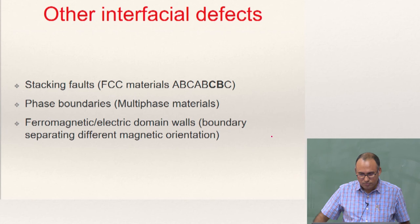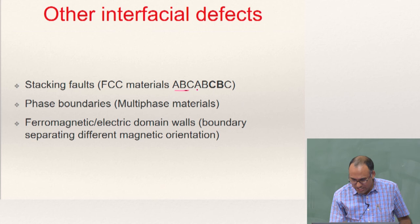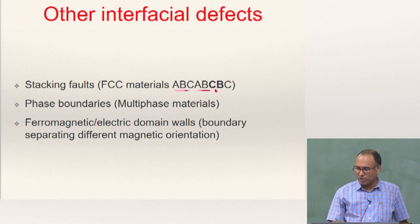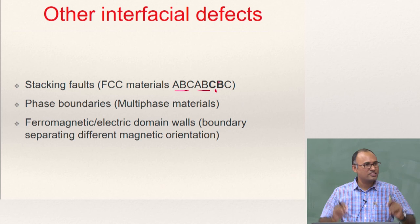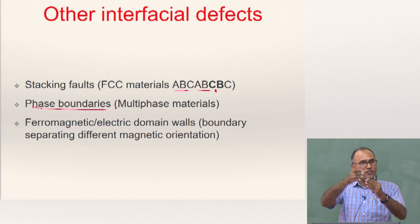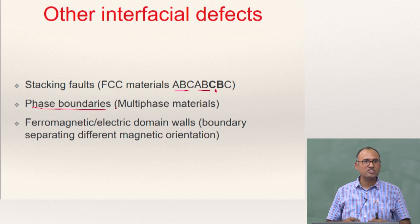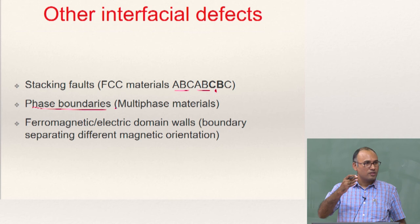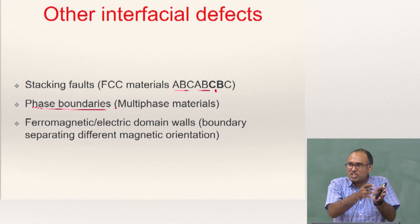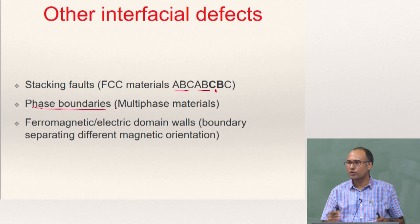What are the other interfacial defects? Stacking faults — we have discussed stacking faults: in close-packed directions such as ABCABC for FCC, if one layer such as A is missing, that is a stacking fault. A narrow stacking fault has only one missing layer; a wider stacking fault has more. You also have phase boundaries — the boundary between one phase and another phase in a multi-phase material. Similarly, in ferromagnetic and ferroelectric materials you have domain walls, where the magnetic orientation vector changes from one region to another. When you look under a microscope, you can actually observe these domain walls in magnetic materials.